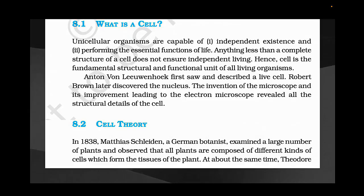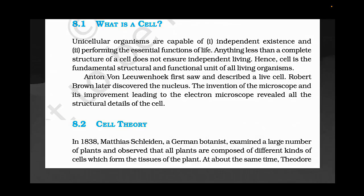This is the cell theory. In 1838, Matthias Schleiden, a German botanist, examined a large number of plants and observed that all plants are composed of different kinds of cells, which form the tissue of the plant. Several kinds of cells are present and they group together to form tissue and perform various functions.